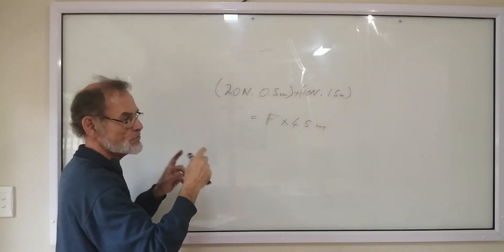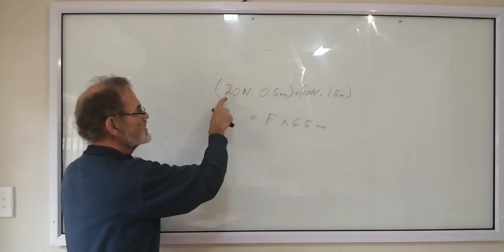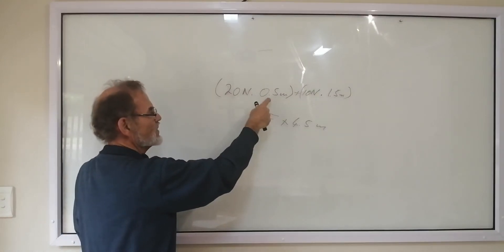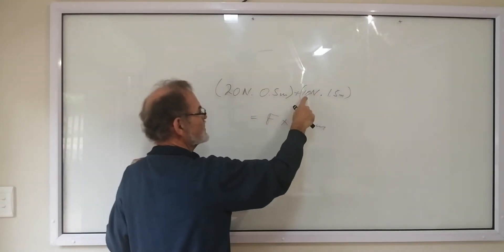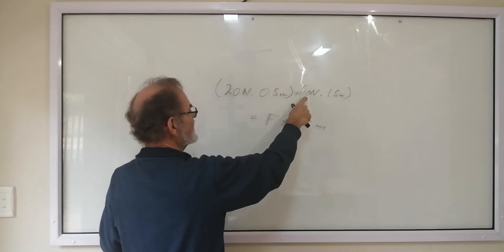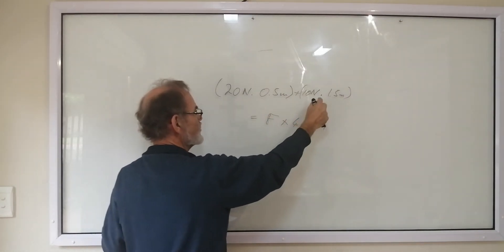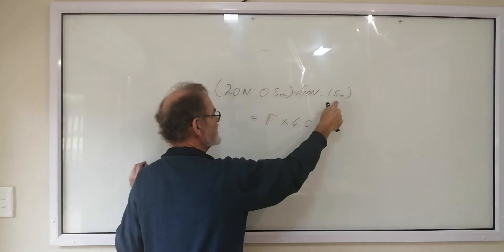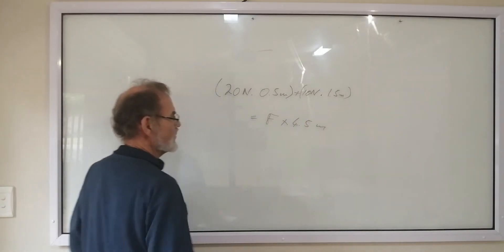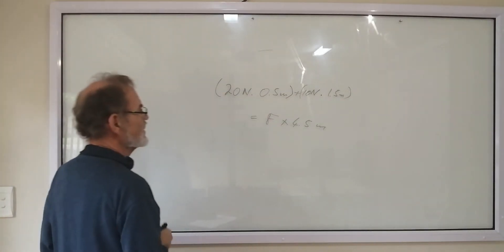And don't forget this 1.5 meters, you have to add the two distances because this force is 0.5 from the pivot. This force is, I think it's about 1 from this force, but it's still, this force is also a distance away from the pivot. So you have to add the two distances.